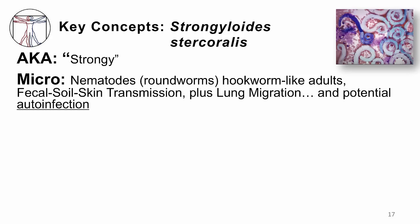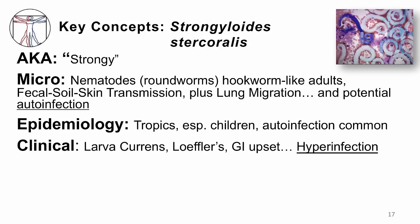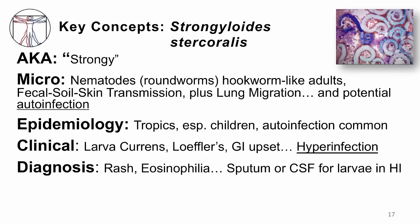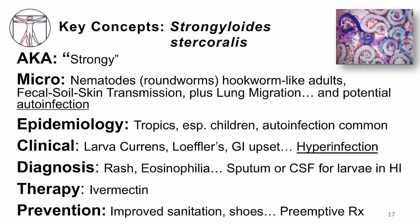So those are the key concepts for strongyloidiasis. It's a roundworm infection, sort of like hookworm — fecal to soil to skin, with a lung phase — but it also has auto-infection, unlike the other worms. It happens throughout the tropics, especially in young kids. Make the diagnosis by looking at larva currans, think about Löffler's syndrome and eosinophilic pneumonitis, and remember that many patients will have GI upset. When patients come in with pneumonia and sepsis, have lived in the tropics, and are immunosuppressed, think about hyperinfection. Check the sputum and CSF for larvae. We treat with ivermectin — our best drug — and prevent transmission through better sanitation, shoe gear, and preemptive treatment before immunosuppression.